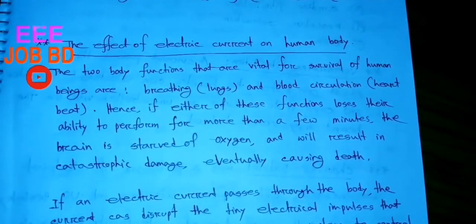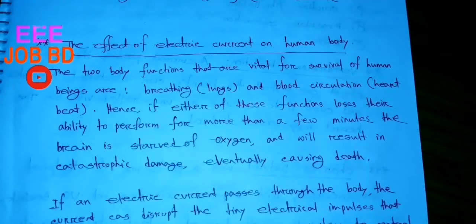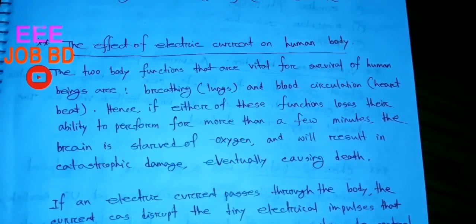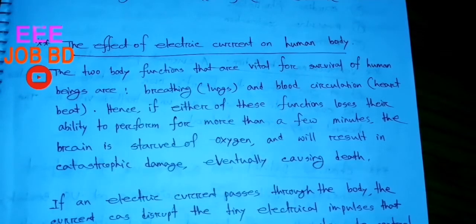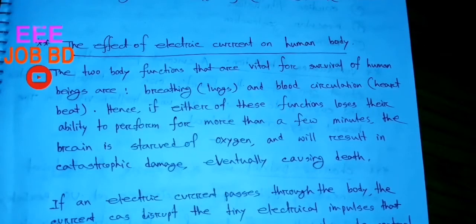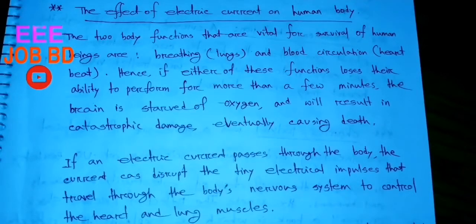The two body functions that are vital for survival of human beings are breathing and blood circulation and heartbeats. This function is a very important function. If either of these functions lost their ability to perform for more than a few minutes, the brain is deprived of oxygen, causing catastrophic damage, eventually causing death.